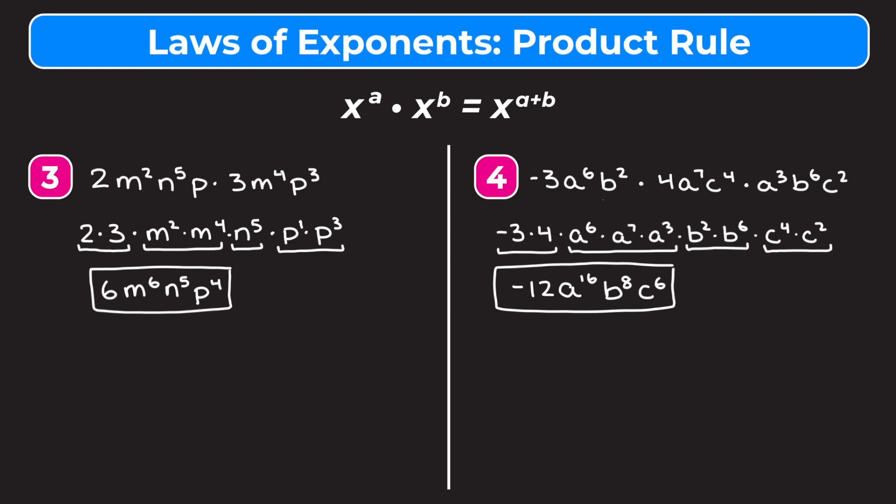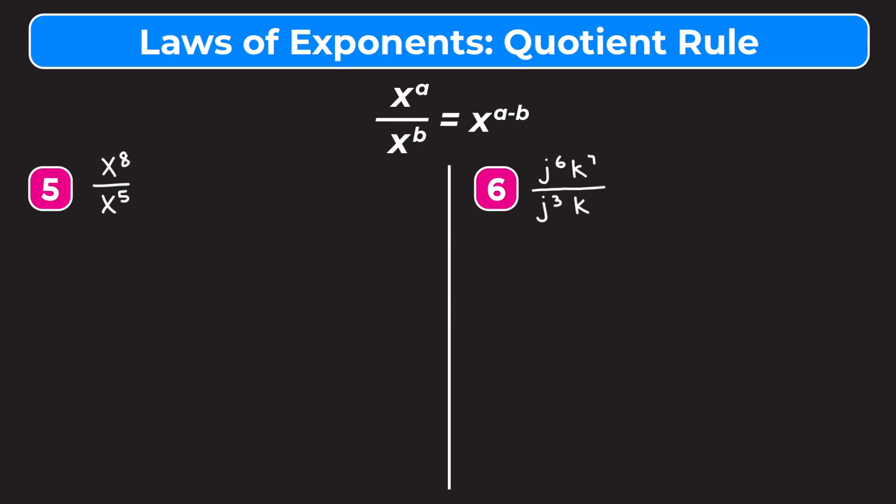Now we're going to take a look at the second law of exponents, called the quotient rule. At the top of the screen you'll see that x to the a over x to the b is equal to x to the a minus b. So this time we're using subtraction, and I'll show you why this works using example five.